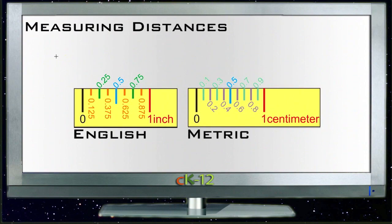This lesson is on measuring distances. We're going to talk about how to use a ruler. You'll see there are two different sample rulers here. If you're in the United States, you're probably using an English ruler like this one on the left. If you're pretty much anywhere else, you're probably using a metric ruler like this one on the right.